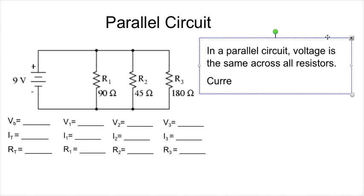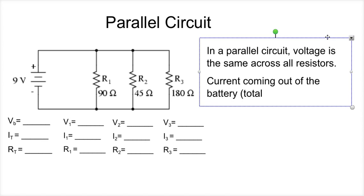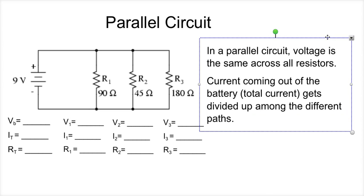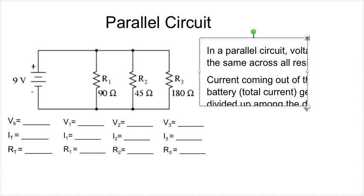The current over here, it only sees that resistor. It's not going to zigzag through here and see all of the resistors. It's just going to take one of the paths around the circuit. So the voltage is the same across all resistors. This means that the current coming out of the battery or the total current gets divided up among the different paths. And we'll see how that works in a sec. So remember these things when we move on.